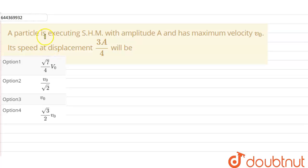Hello everyone, so our question is: a particle is executing SHM with amplitude A and has maximum velocity V0. Its speed at a distance of 3A upon 4 will be.